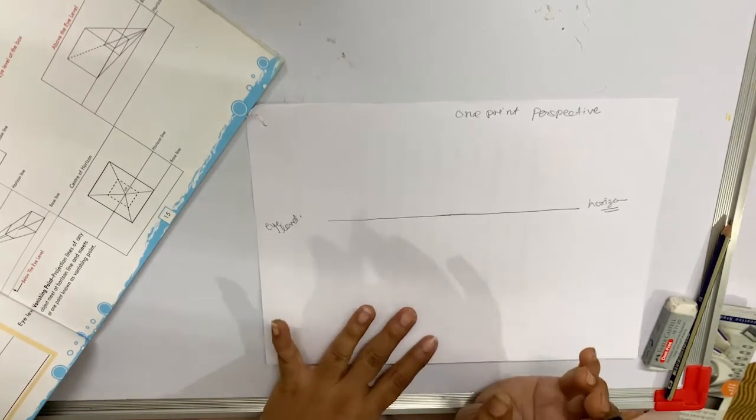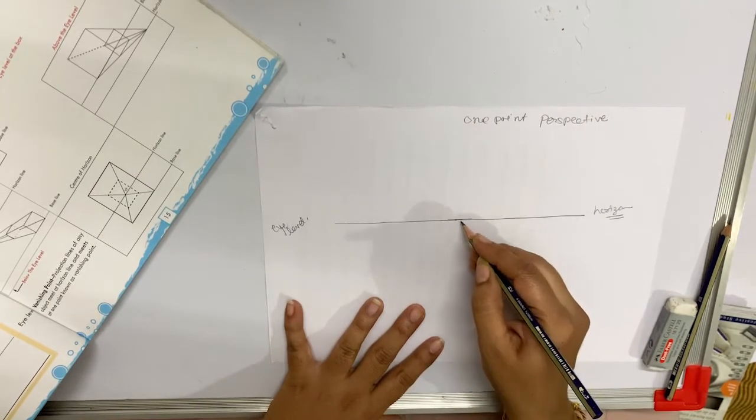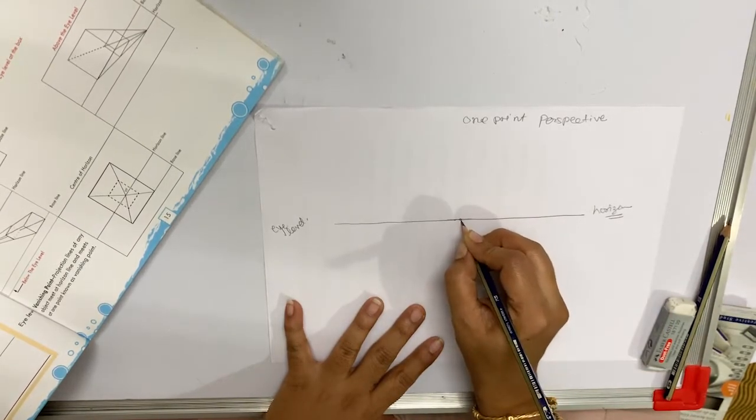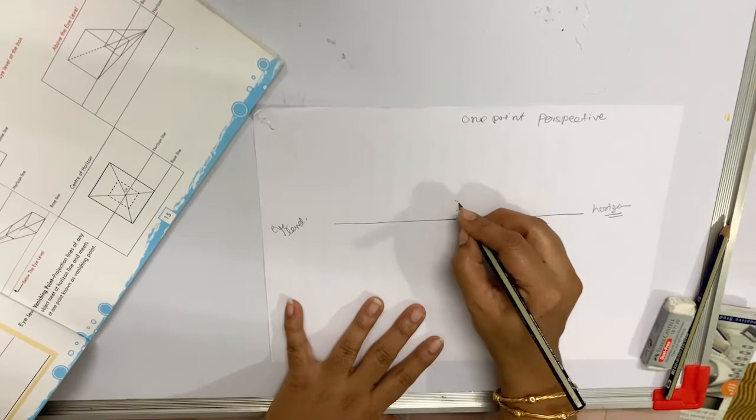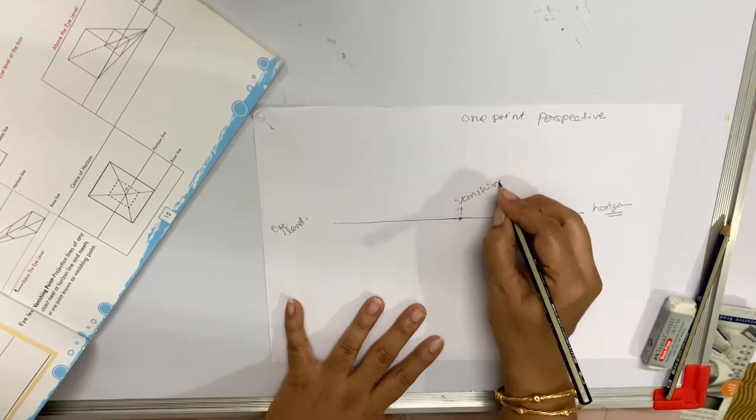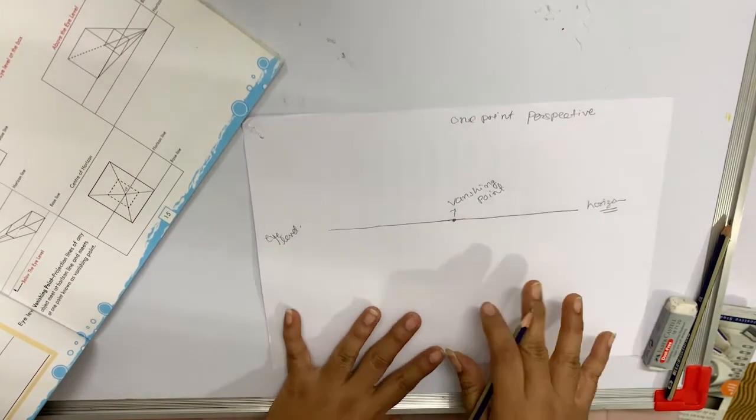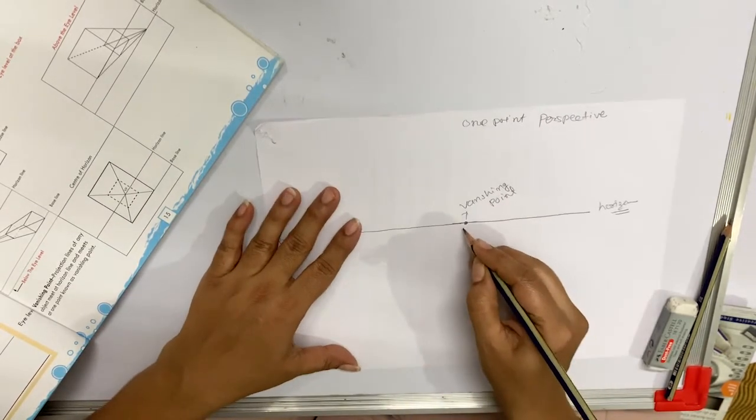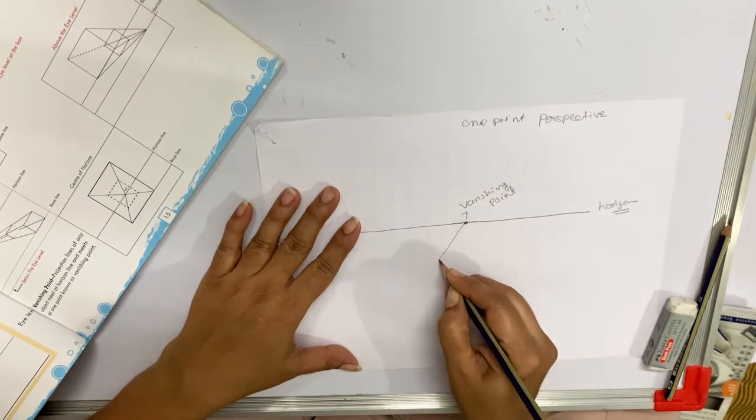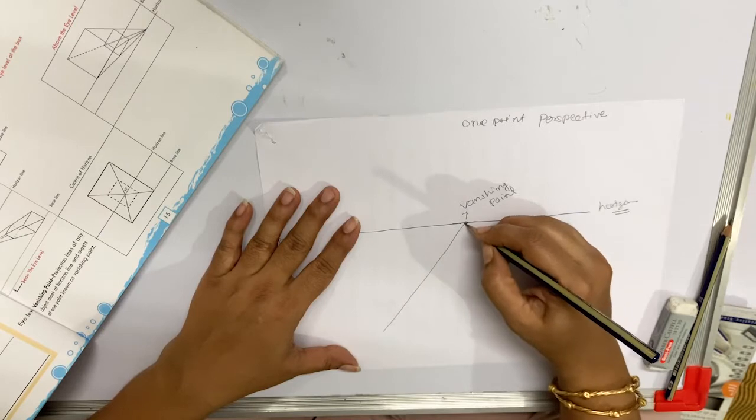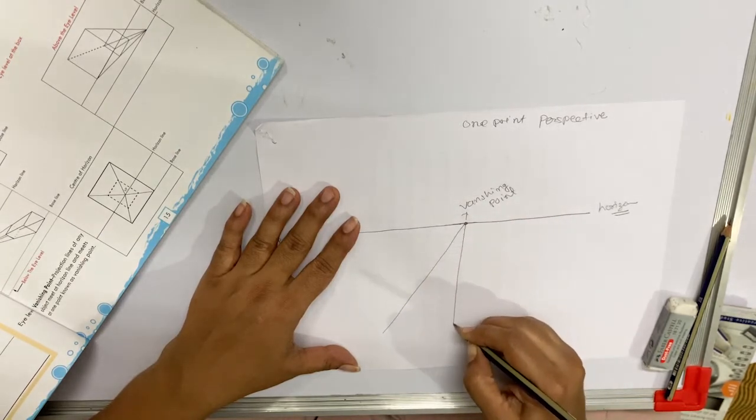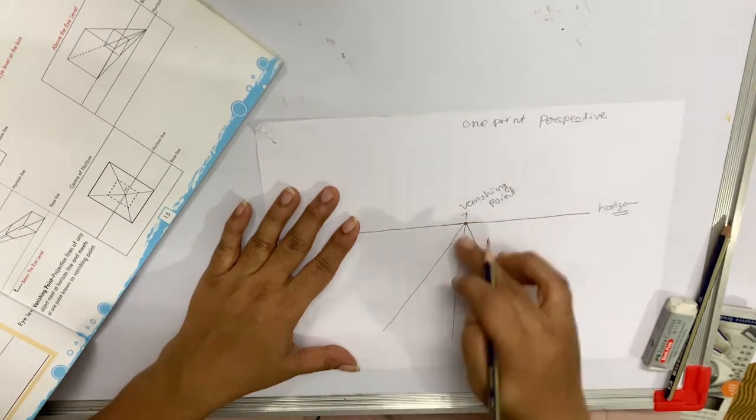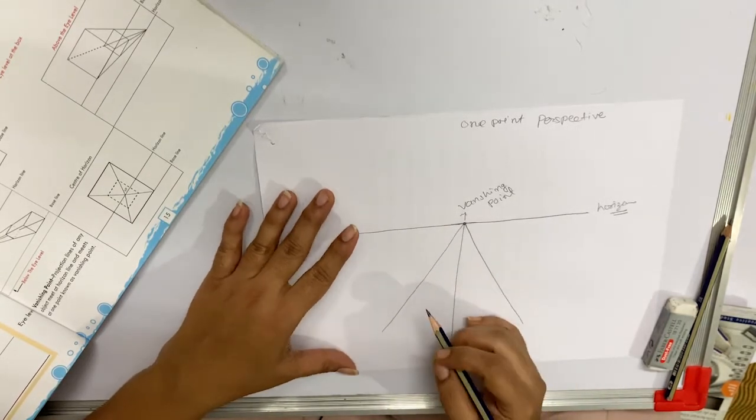On this horizon line we will make one point that is called a vanishing point, where two parallel lines look like they are intersecting or meeting each other. These are called our perspective lines.